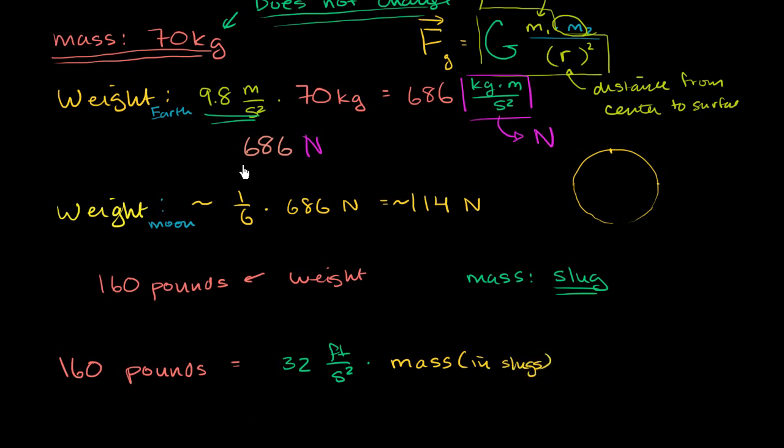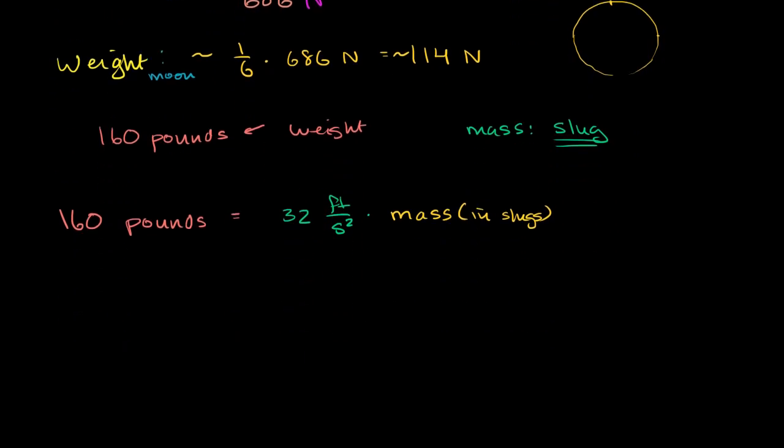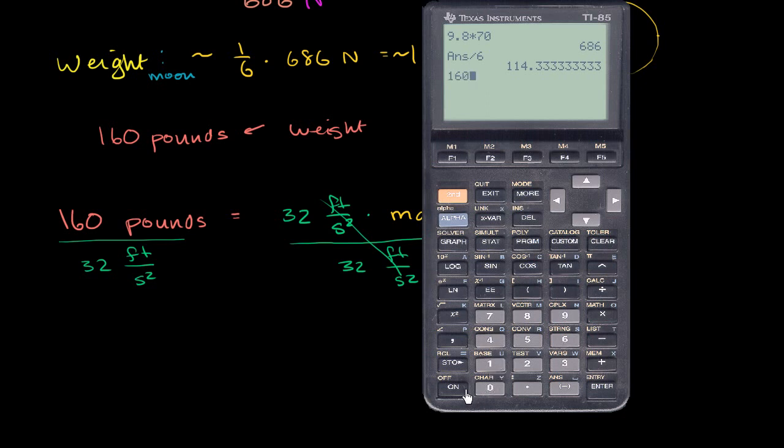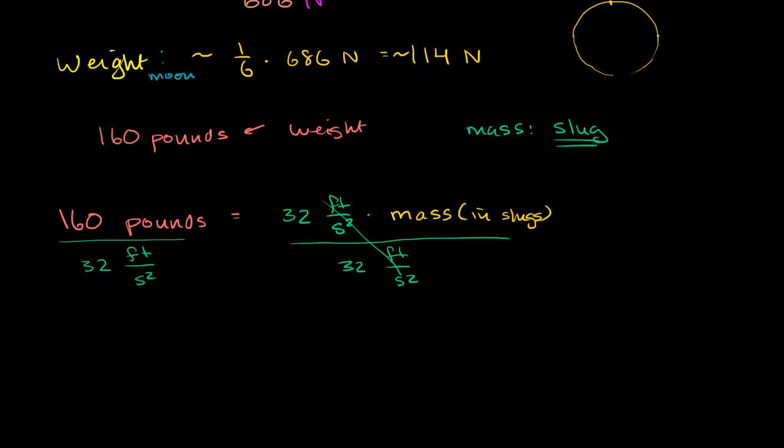So to figure it out, you divide both sides by 32 feet per second squared. Divide both sides by 32 feet per second squared. Cancels out. And then let me get my calculator out. So I have 160 pounds divided by 32 feet per second squared. And I get exactly 5. So I get 5. And the units here in the numerator, I have pounds.